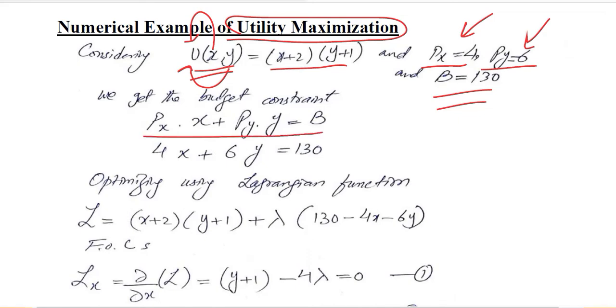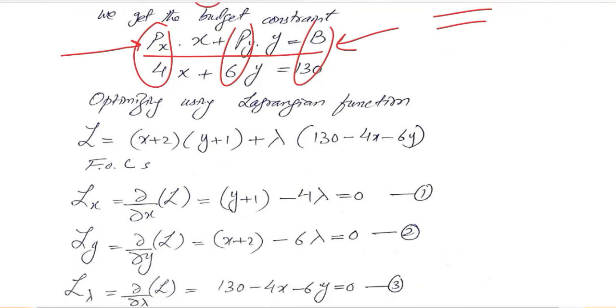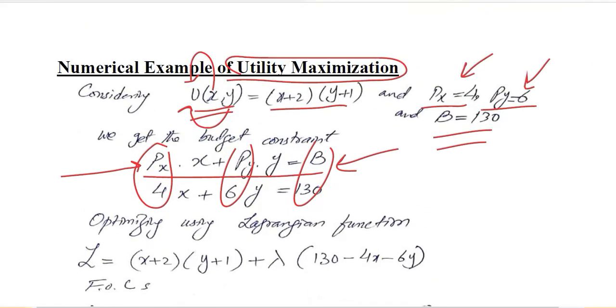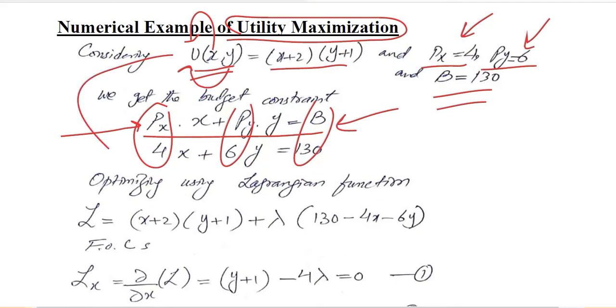So the budget constraint can be formed readily by using the standard form of the budget constraint that we have studied in microeconomics. And when we put the values of px and py and b, we get the budget constraint. The budget constraint is reformed by keeping the constant intact and replacing the variable terms from left-hand side to the right-hand side.